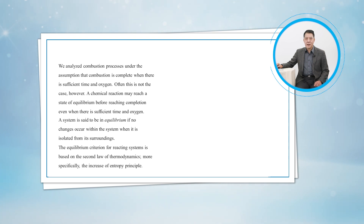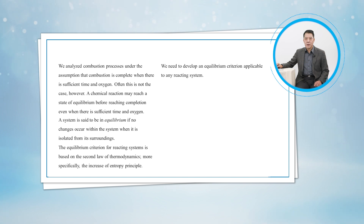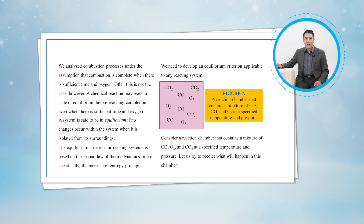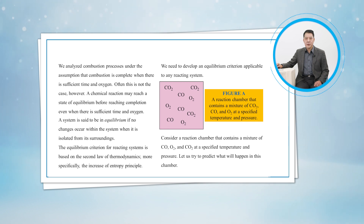Most reacting systems encountered in practice are not adiabatic, however. Therefore, we need to develop an equilibrium criterion applicable to any reacting system. Consider a reaction chamber that contains a mixture of carbon monoxide, oxygen, and carbon dioxide at a specified temperature and pressure, as shown in the figure.